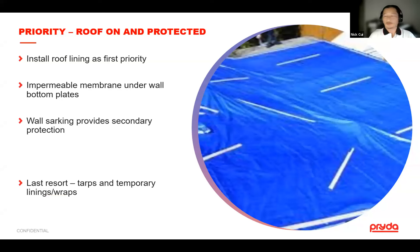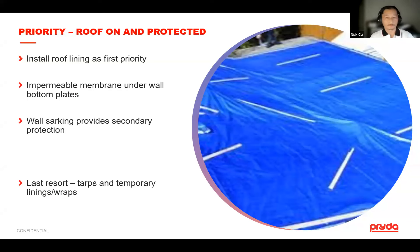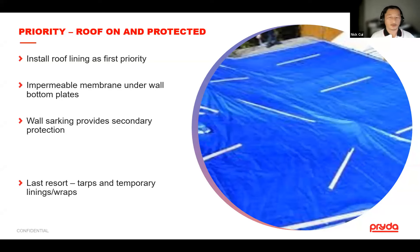For protecting the building, covering the roof is the first priority and should be done as quickly as possible. Using a correct permeable membrane under wall bottom plates helps prevent moisture damage, and sealing walls and building envelopes with sarking or suitable membrane adds a second level of protection. Where these measures aren't physically possible, tarps or temporary linings are a last resort — not ideal but implementing temporary tarps can save significant remedial costs down the line, and in some cases may save the building from being condemned.